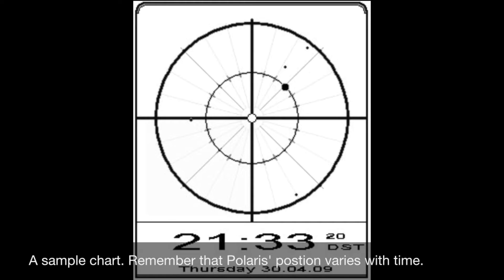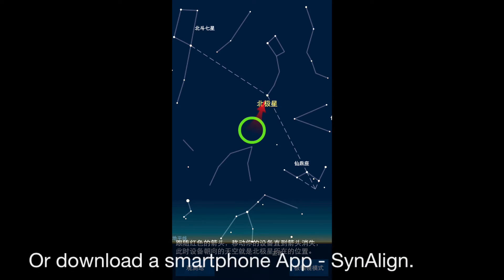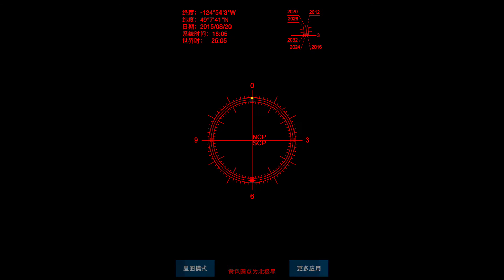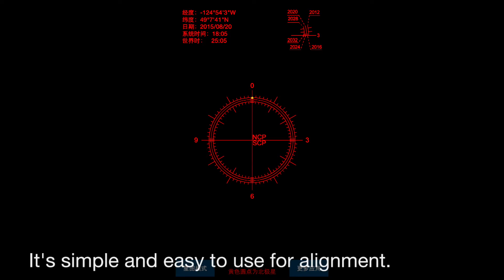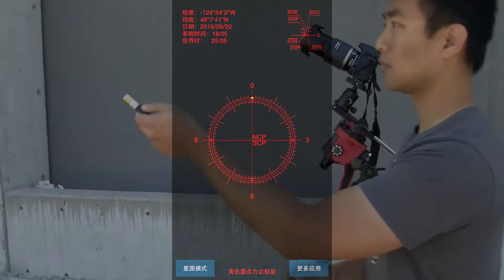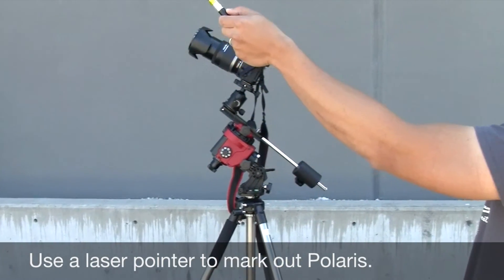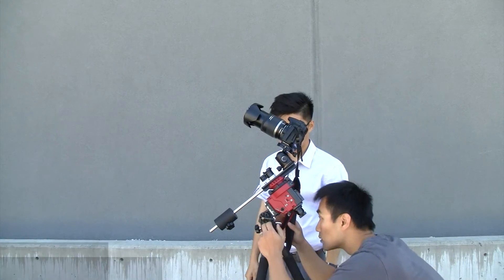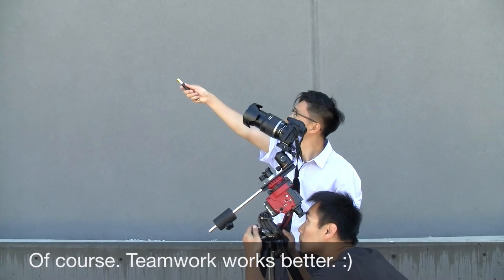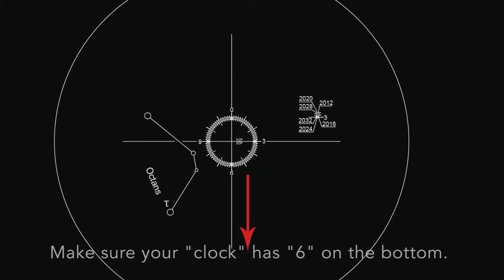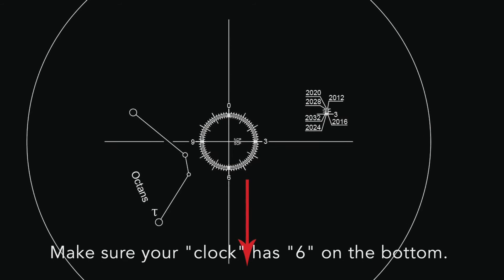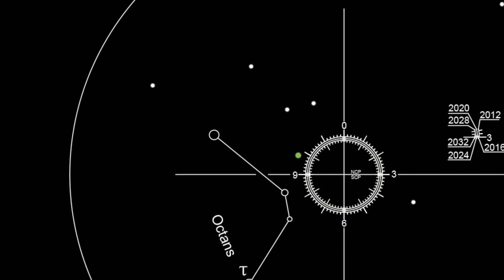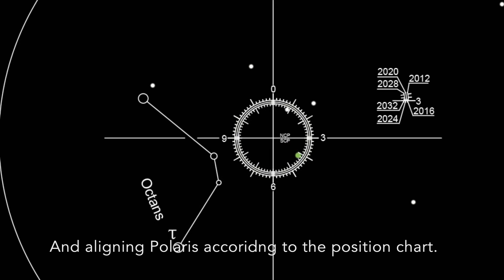You can download a polar position chart on the web, or you can download a smartphone app called Polar Align. It's simple and easy to use for alignment. Use a laser pointer to mark out Polaris. Of course, teamwork works better. Make sure your clock has six on the bottom, and now align Polaris according to the position chart.